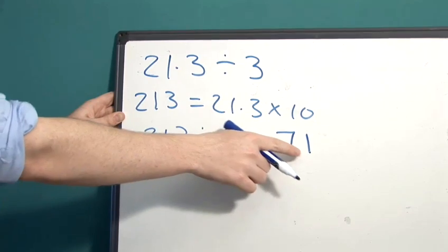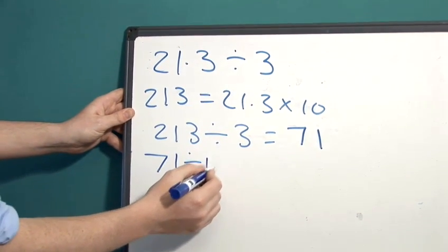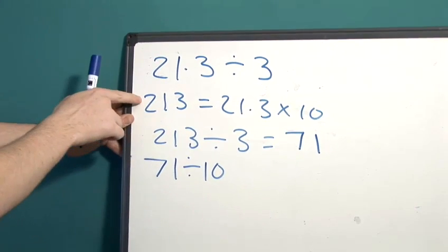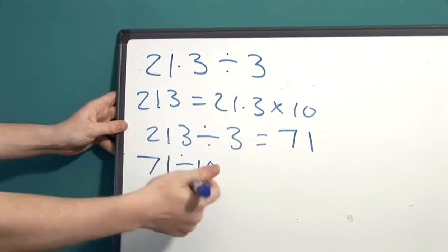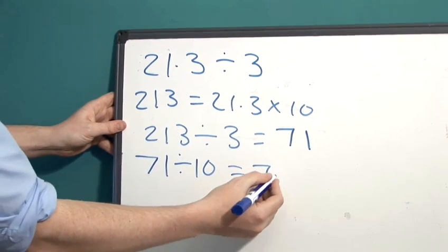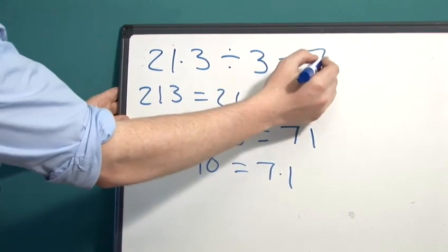Now we need to take this 71 and divide it by 10, because here we multiplied by 10 to get 213. 7.1 is now the answer to our original problem.